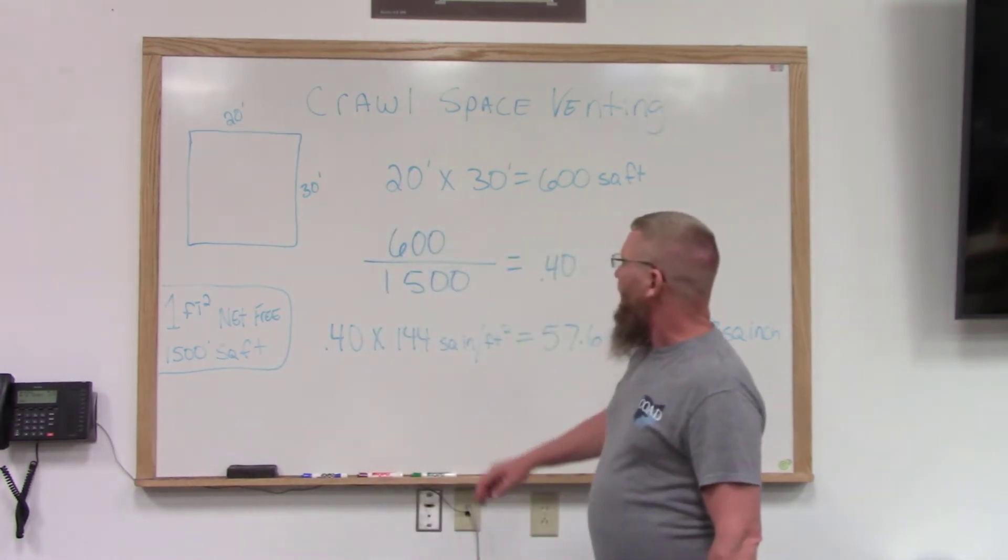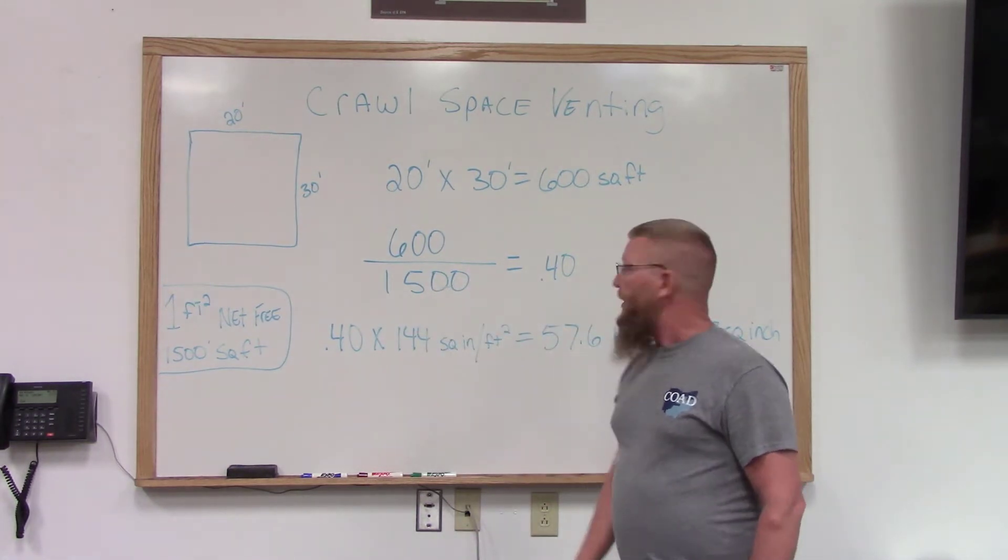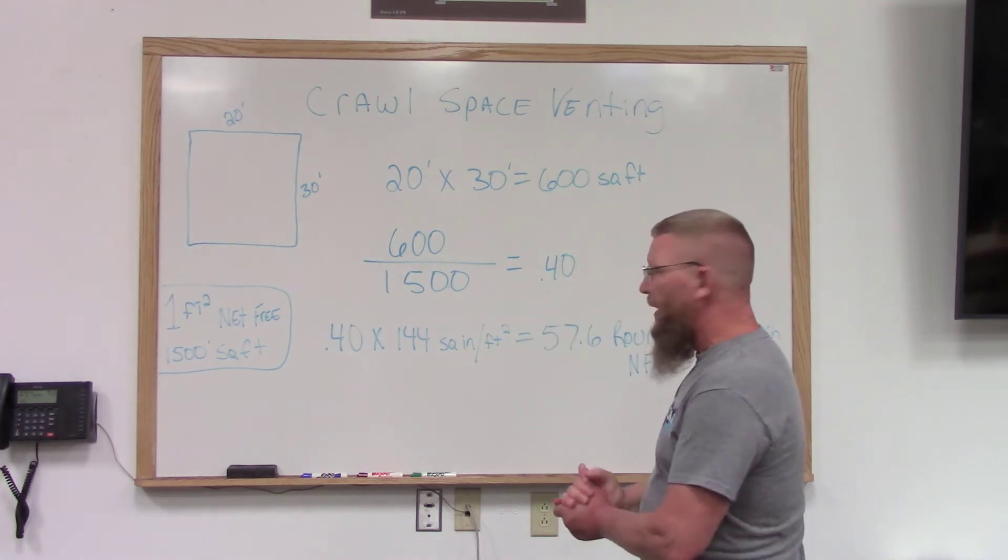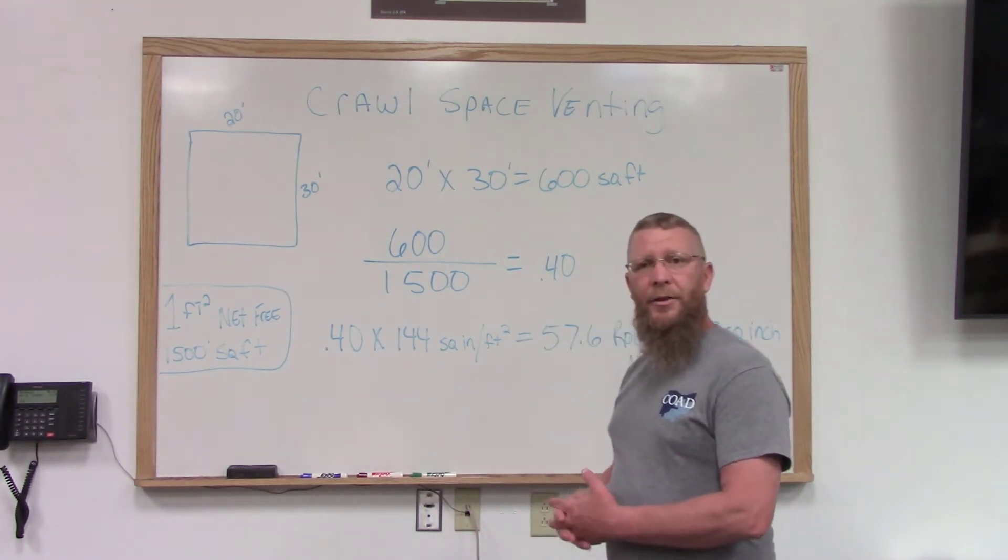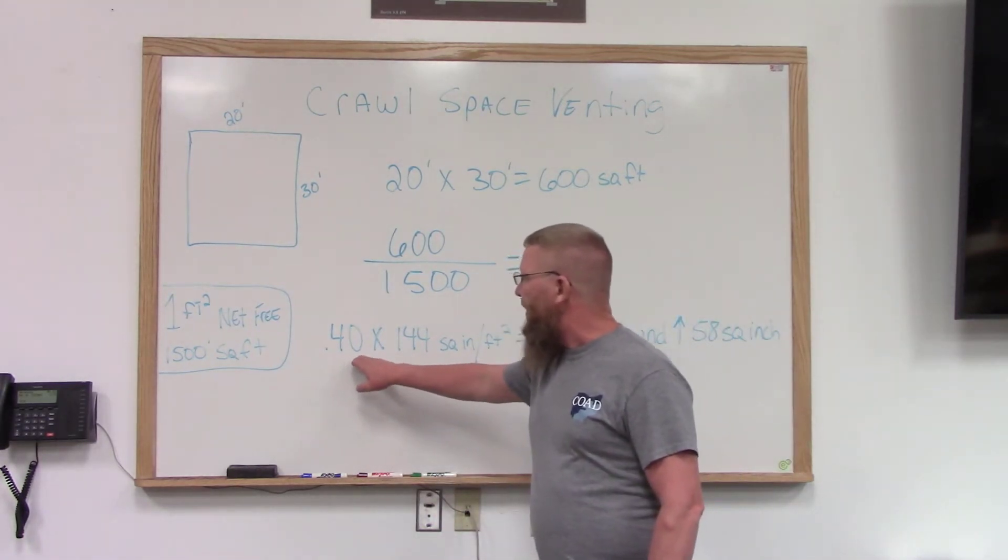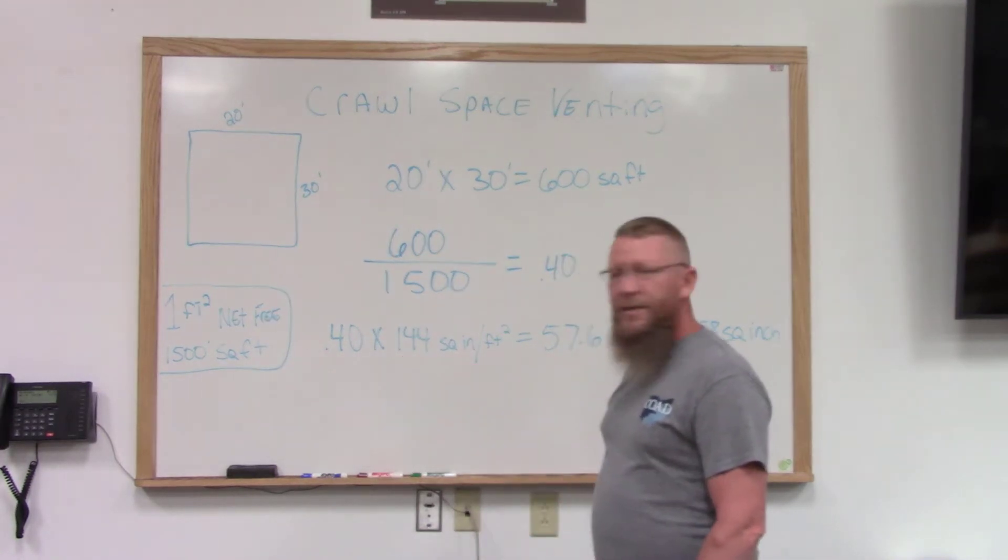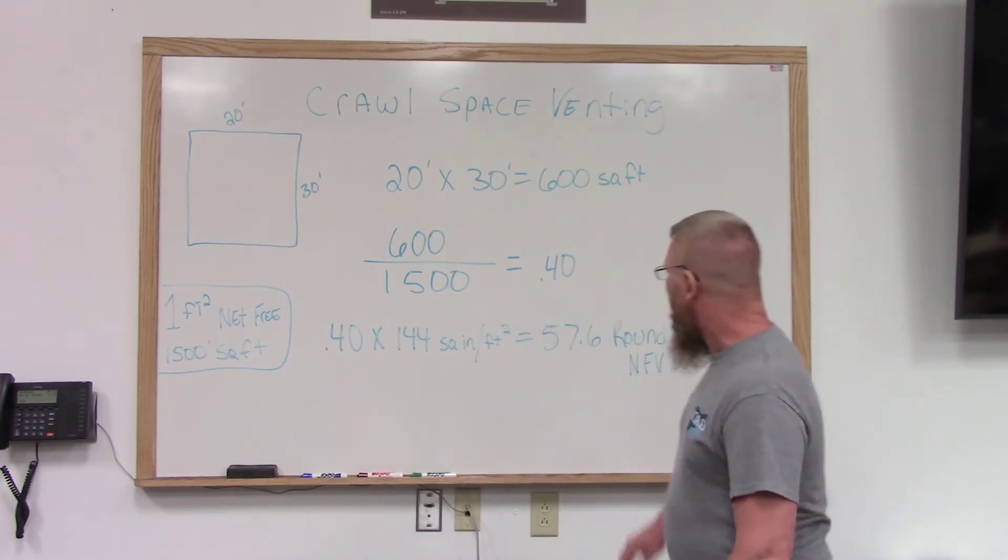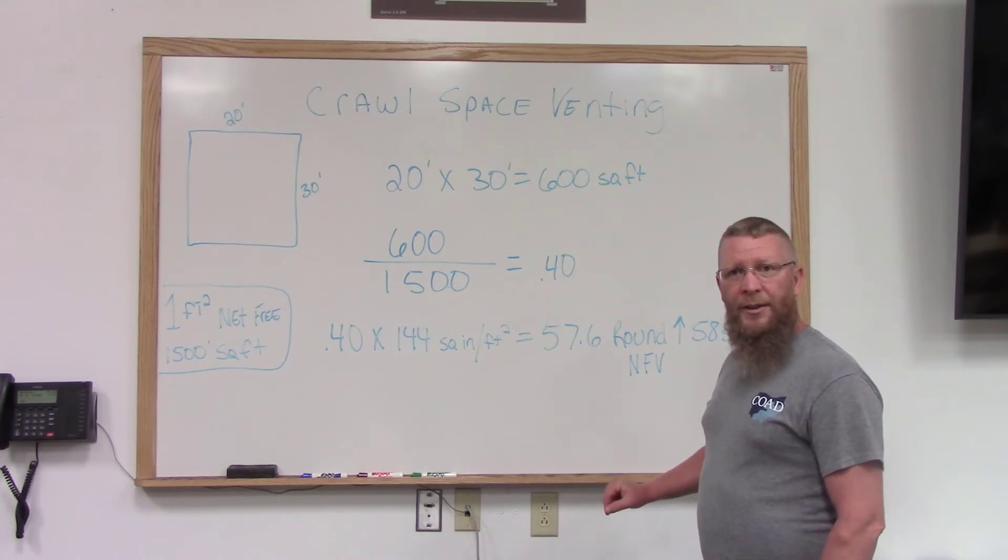So I'm going to take 600 and divide 1,500 into it. That comes out to 0.40. Well that's in feet, so I need to change that into inches. And how I'm going to do that is, I'm going to take my 0.40 and multiply that by 144, because that's how many square inches are in one square foot. That comes up to 57.6 square inches.